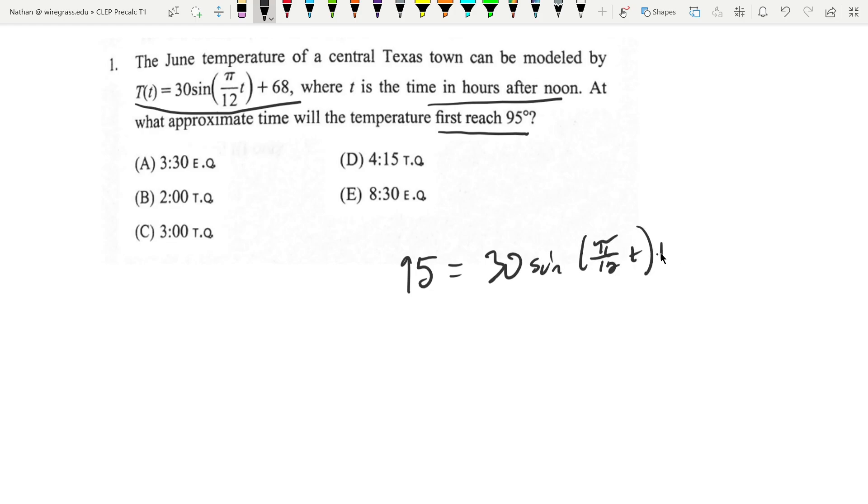Okay, the first step is going to be subtract 68, then divide by 95. Let's do that. I mean, divide 95 by 30. So when you do that, you get 0.9 equals sine pi over 12T.